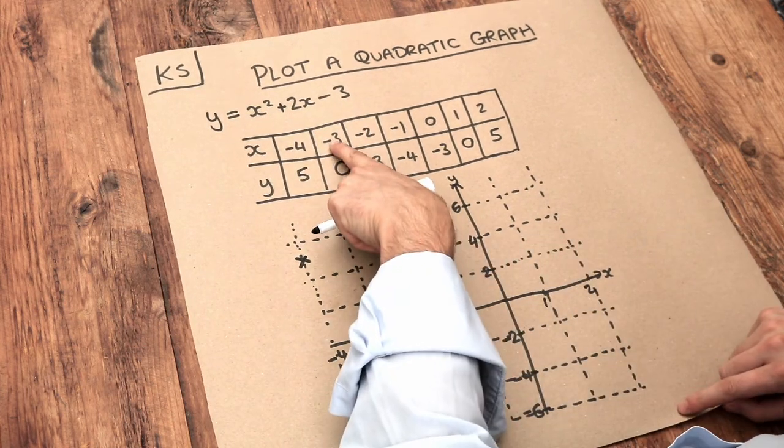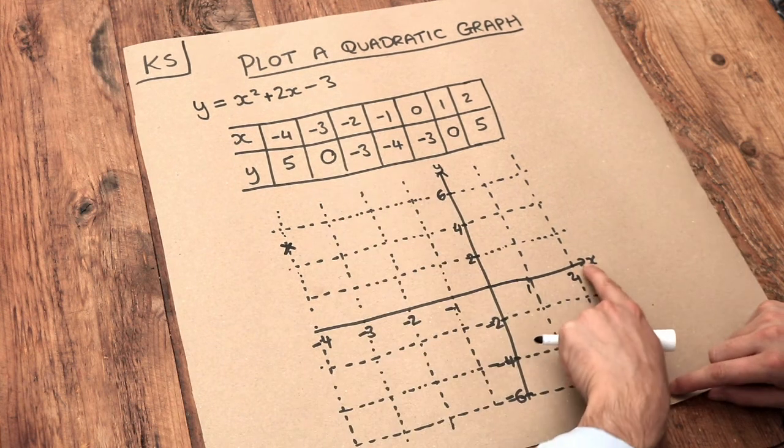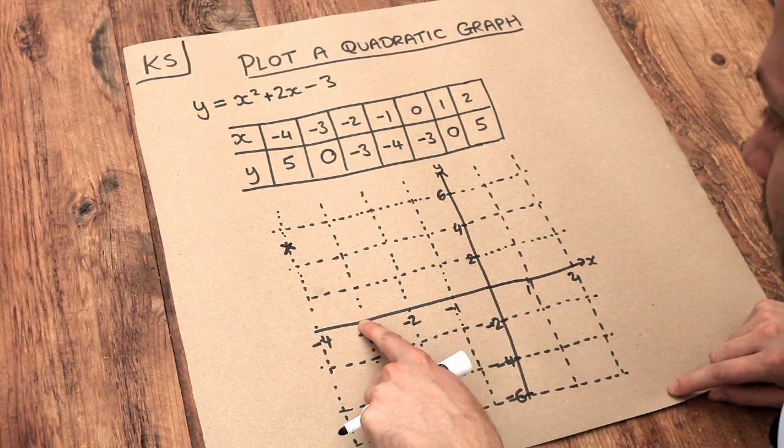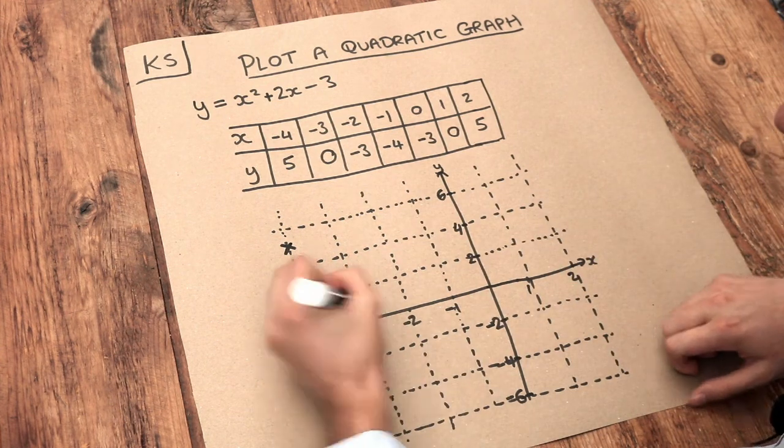Next we've got the point minus 3, 0. So when x was minus 3, y was 0. On the x axis, so let's go to minus 3, it's here. And the y value is 0. That means we don't go up or down. So it's going to be here.